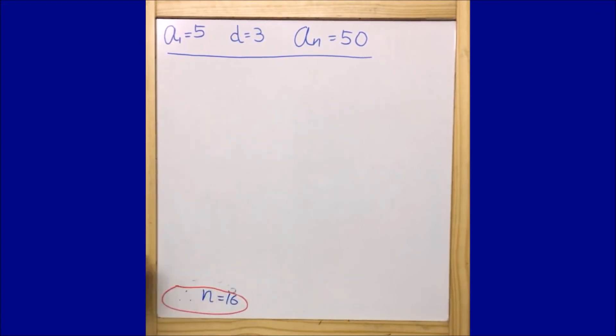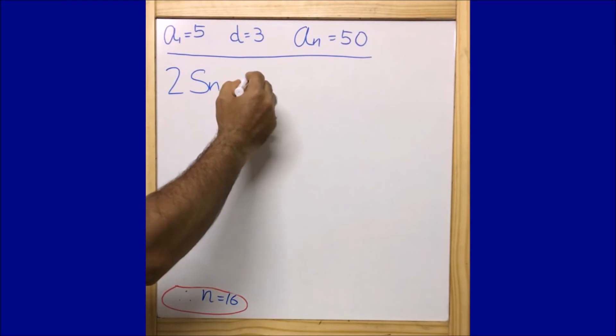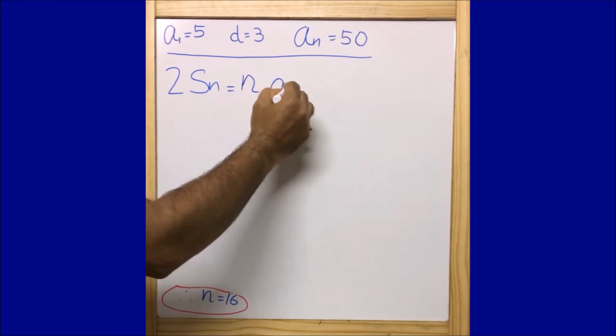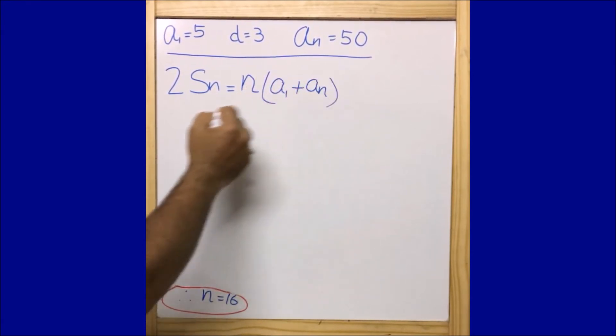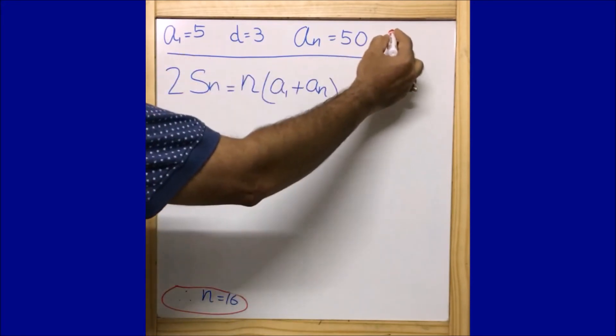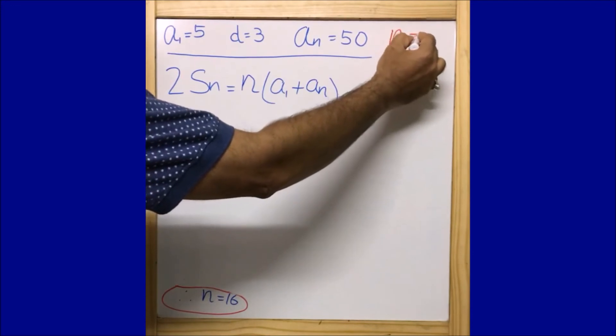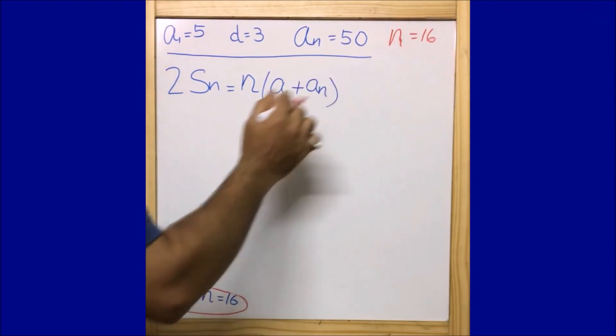We know the formula for Sₙ is: 2Sₙ equals n times (a₁ plus aₙ). Now whatever data we have, we can replace that data here. The value of n is 16, so we are going to replace this value here.